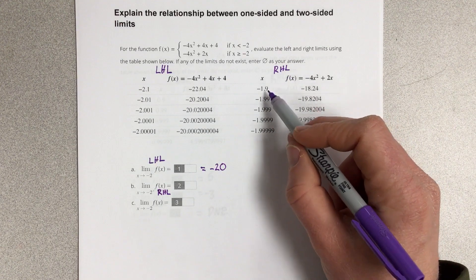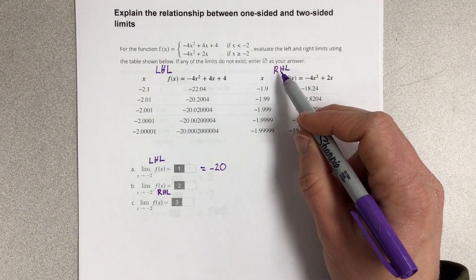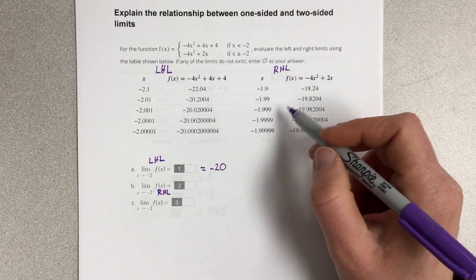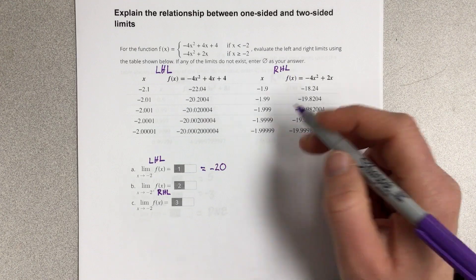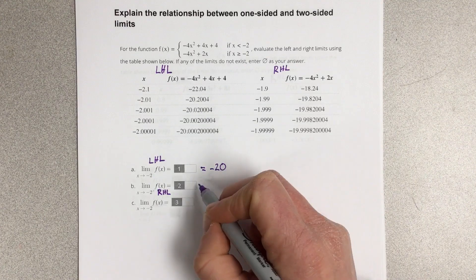And as we reduce this value here, this right-hand limit, we're getting closer and closer to negative 2 from the right. We are getting negative 20.